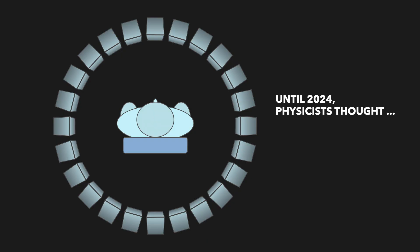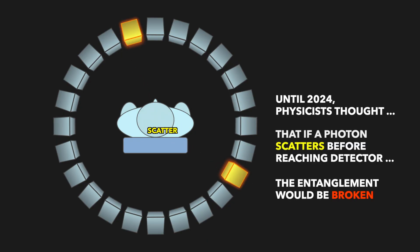Up until 2024, physicists believed that when one of the photons scattered before reaching the detector, the entanglement between them was likely to be broken. So we did an experiment to test this.